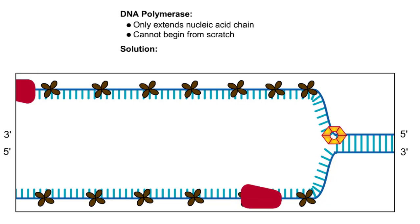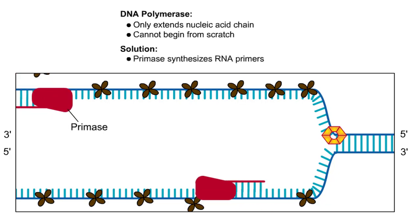To give the DNA polymerase a place to start, an RNA polymerase called primase first copies a short stretch of the DNA strand. This creates a complementary RNA segment up to 60 nucleotides long that is called a primer.